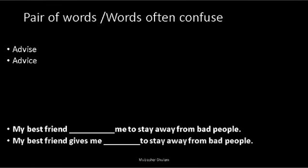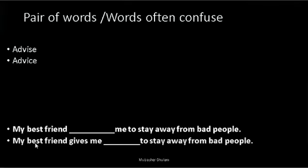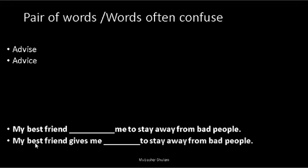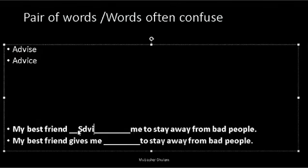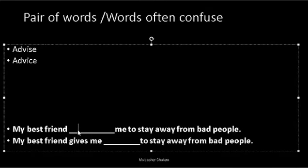What are the pair of words or words often confused? I'd like to tell you. Let's start with 'advice' and 'advise'. Now there are two blanks at the end of this page. If you can look here: 'My best friend ___ me to stay away from bad people.' And 'My friend gives me ___ to stay away from bad people.' So now we are confused.